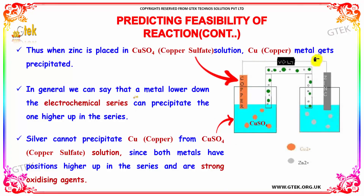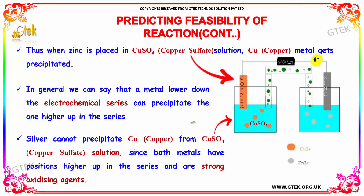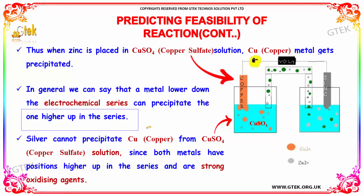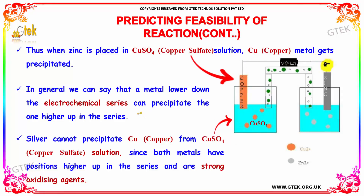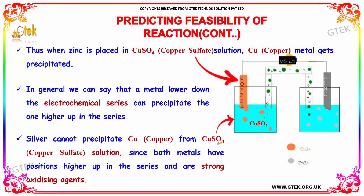In general, a metal lower down in the electrochemical series can precipitate a metal higher up in the series. Notably, silver cannot precipitate copper from CuSO₄ solution, since both metals have positions higher up in the series and are considered strong oxidizing agents.